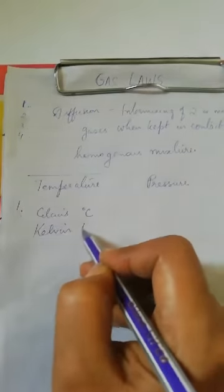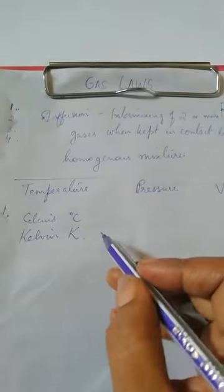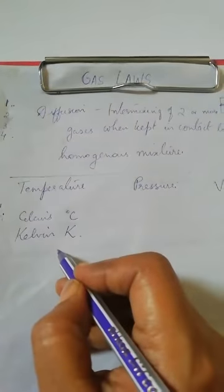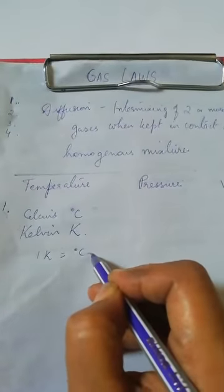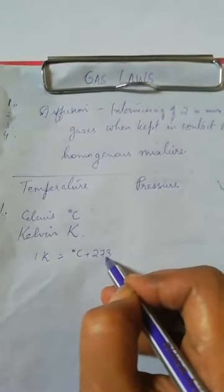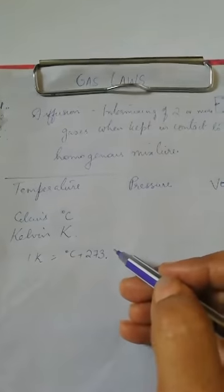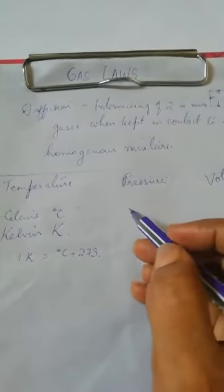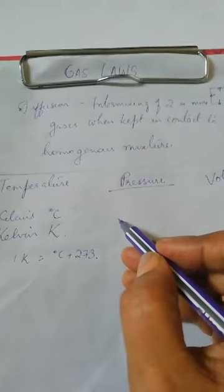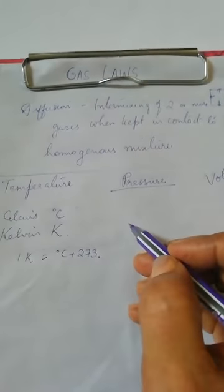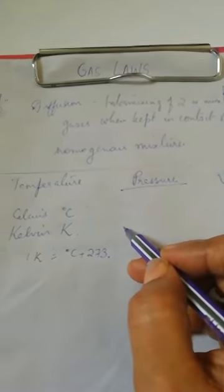About the Kelvin scale, I will explain when I teach Charles' Law. For now, remember that 1 Kelvin is equal to degree Celsius plus 273. I will be explaining the entire Kelvin scale, or the absolute scale, in my next video. The pressure of a gas is the average force exerted by bombardment of gas molecules on the walls of the container per unit area.